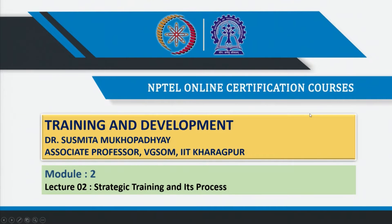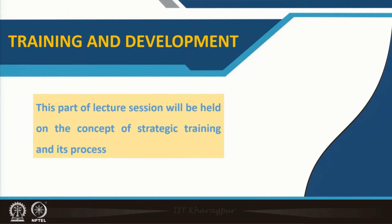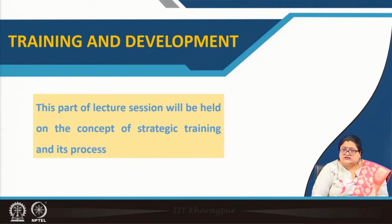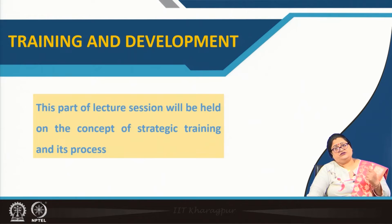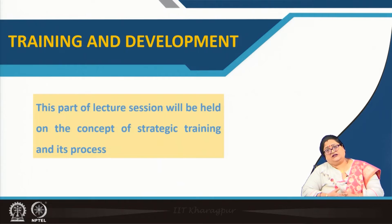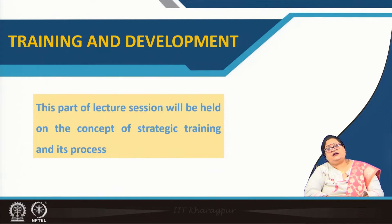In the second lecture today, we are going to discuss strategic training and its processes. In the last lecture, we tried to connect the importance of training to business objectives. We looked at different kinds of business strategies and how training is an important aspect of making a strategic choice — conducting internal and external analysis, finding gaps, and using training and development to reduce those gaps so we become competent enough to reach the objective.